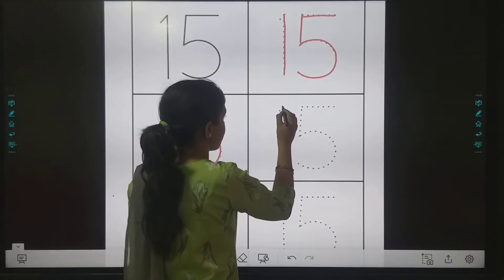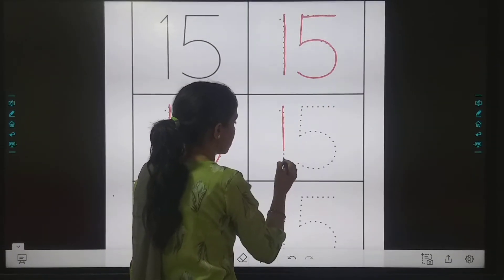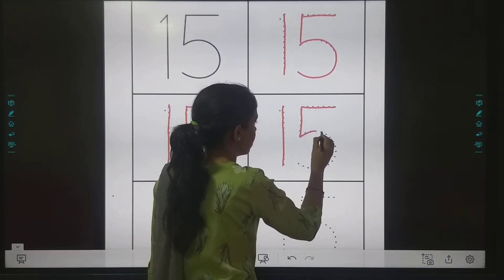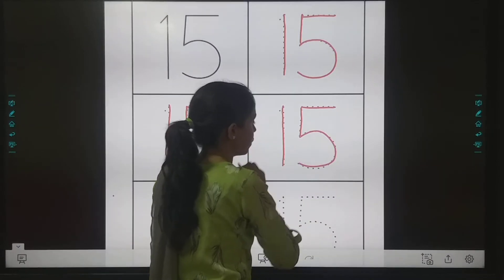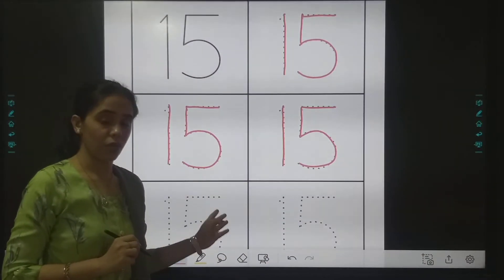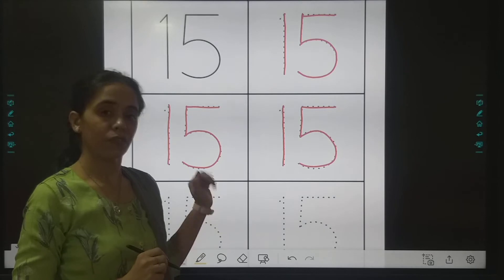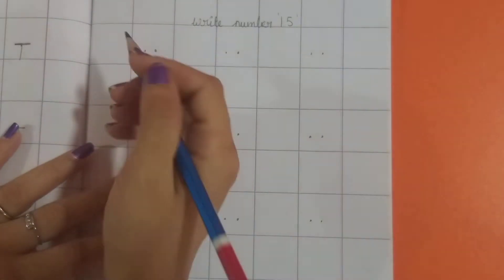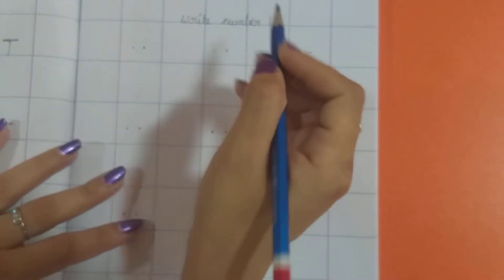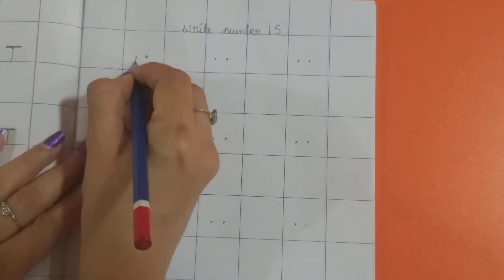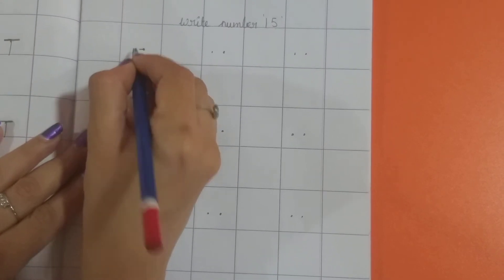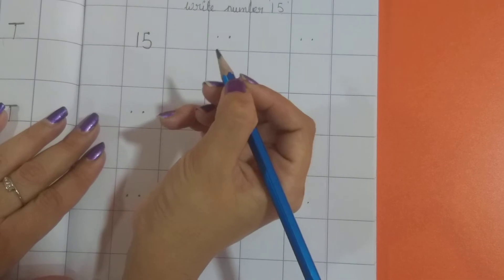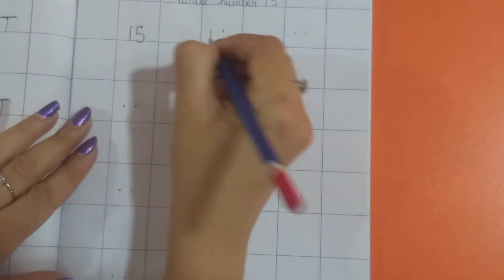Once again we will write 1 and 5. So in this way we are going to trace number 15. Now we will be tracing in the notebook. Which number are we going to trace? 1, 5 — 15! First we will write 1, then a small sleeping line, standing line, then make a curve.